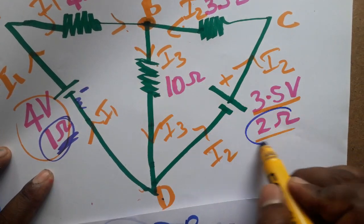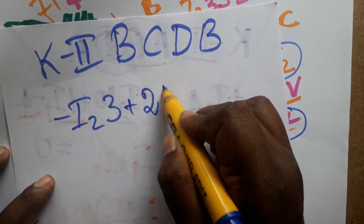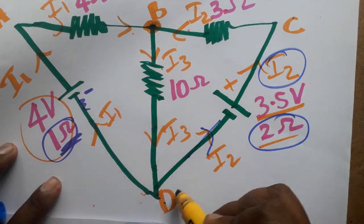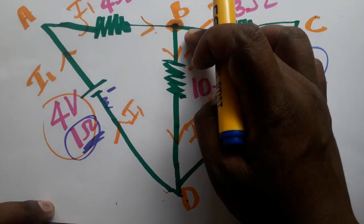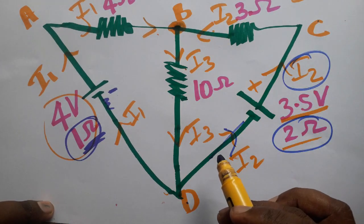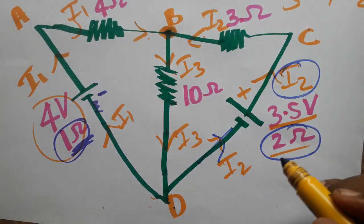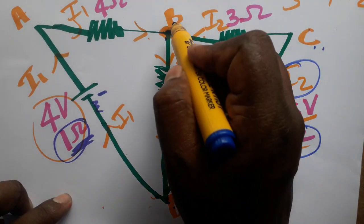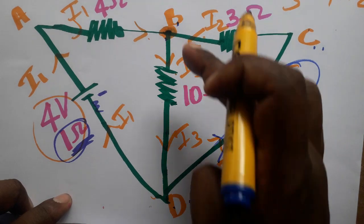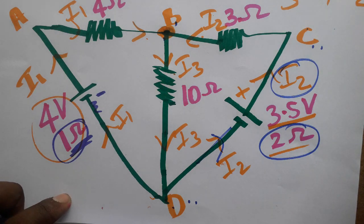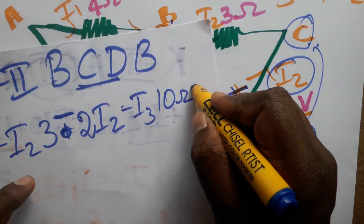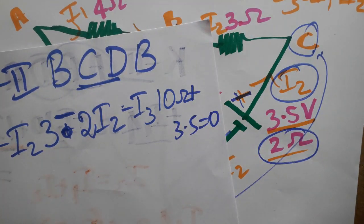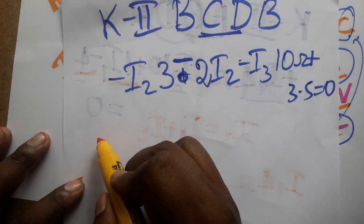Going from B to C, the current I2 flows in the opposite direction to my loop, so it is minus I2 times 3 ohms. The internal resistance is 2 ohms with current I2 in the same direction, so plus 2·I2. From C to D, the current is opposite, so minus. Going D to B, current I3 flows in the opposite direction, so minus I3 times 10 ohms. When traversing C to D, the first terminal encountered is positive, so plus 3.5 volts equals zero.